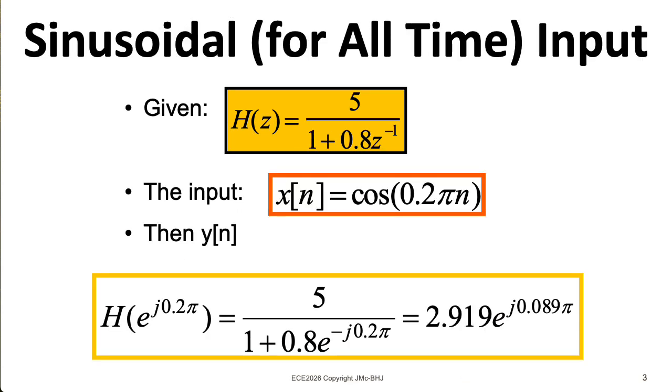For case one, we're putting in a cosine with a frequency of 0.2 pi. We can get the frequency response by evaluating the system function at e to the j omega-hat. Here, omega-hat equals 0.2 pi, and then putting the result in polar form gives us this.